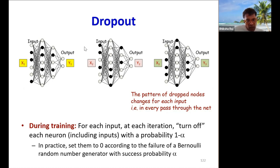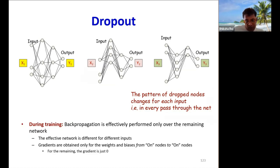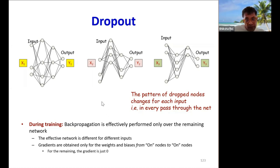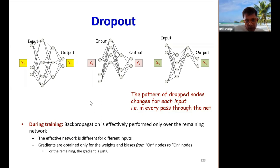The key is that the specific set of units switched off will be different for different training inputs — we randomly select which inputs and neurons to switch off afresh for each training input. So the first training input may see one network, the second a different one, and the third yet another. Each input effectively sees a different network. In fact, even for the same input, we will have different switch-off patterns in different iterations, so the same input will see different effective nets each time.